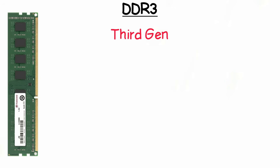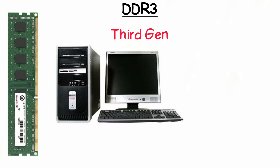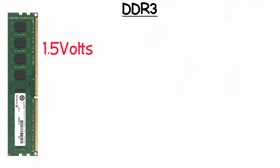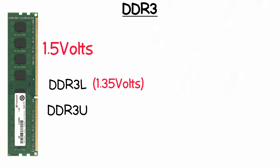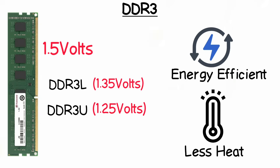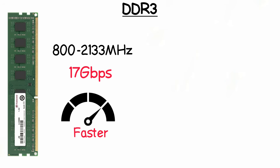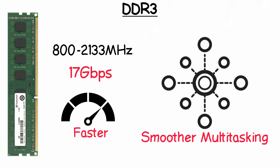DDR3 was the third generation of double data rate memory that powered millions of computers worldwide, introduced in 2007. It runs on 1.5 volts, with low voltage versions like DDR3L at 1.35 volts and DDR3U at 1.25 volts, meaning better energy efficiency and less heat. It operates at speeds ranging from 800 to 2,133 megahertz with data transfer rates up to 17 gigabits per second, giving faster system performance and smoother multitasking.